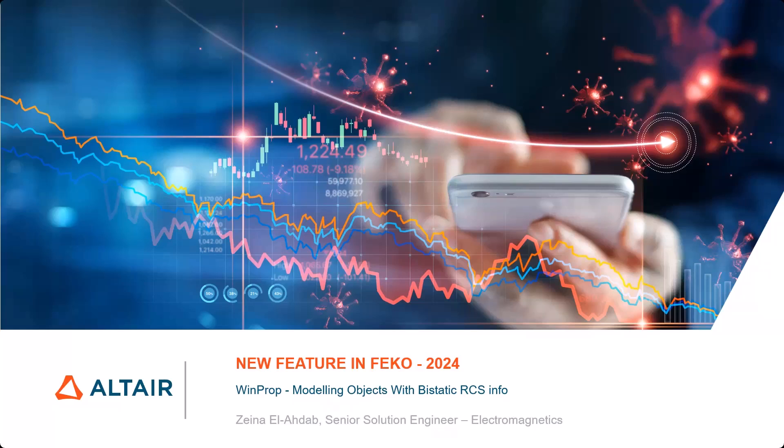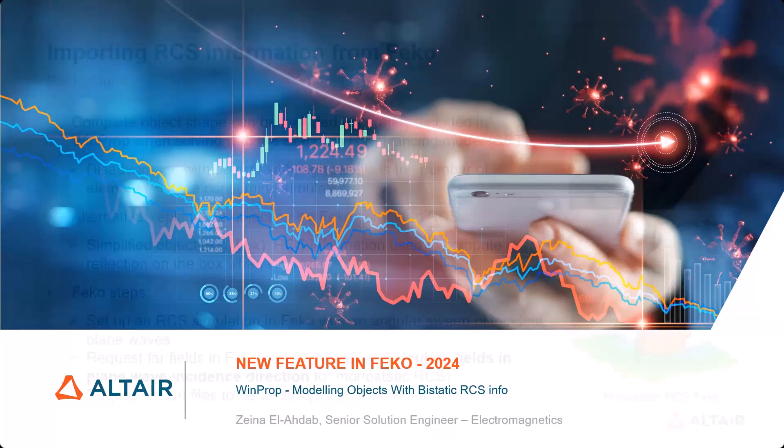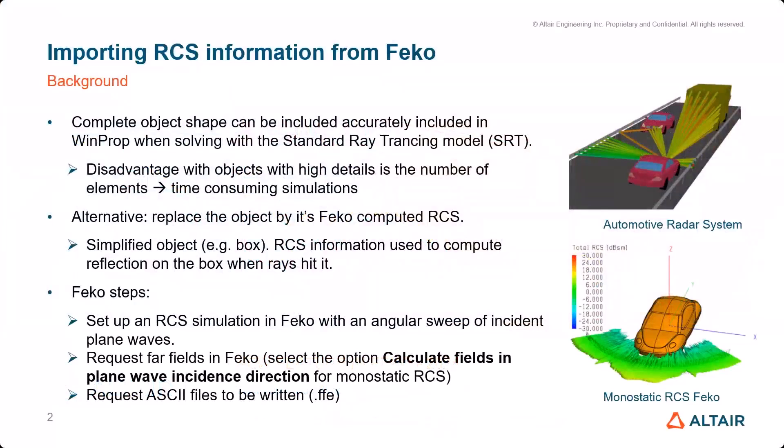Let's move to how we can use fecal-generated RCS information when we want to model RCS objects in a bigger environment with multi-path effects. For this we can use the WinProp tool for radio wave propagation analysis. Normally we use ray optical simulations in WinProp for this type of analysis, but these simulations can be accelerated if selected objects are replaced by their scattering information imported from fecal.